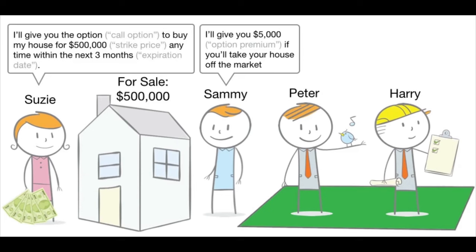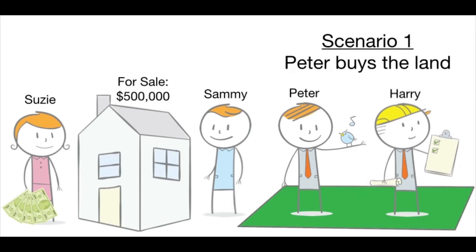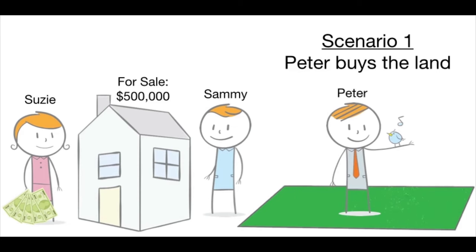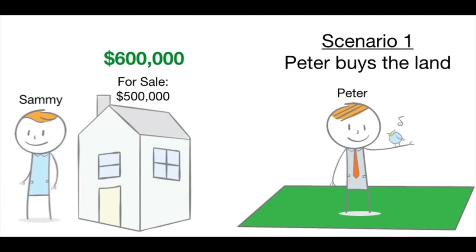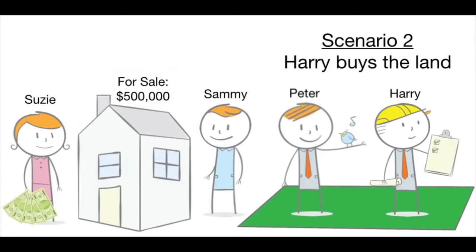Three things could happen. In scenario one, Peter buys the nearby parcel of land, which increases the value of Susie's home to say $600,000, in which case Sammy will be very happy to exercise his option to buy the house for $500,000.